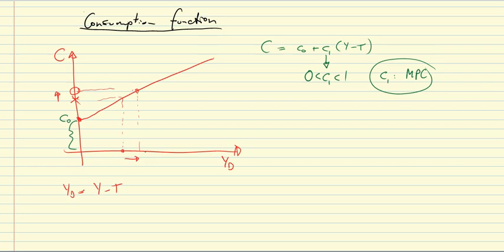That is basically what the consumption function is. We can look at the consumption function, though, in still a little more detail. Let me add a new page and write the consumption function down here once more: C = C0 + C1(Y - T). We can, for example, expand the expression and write C0 minus C1T plus C1Y.